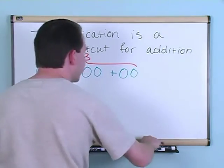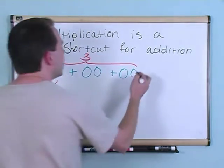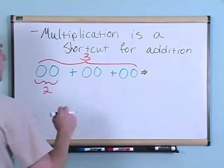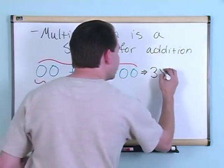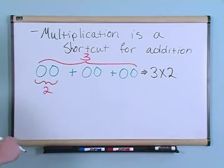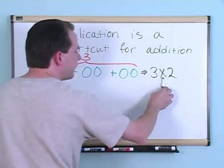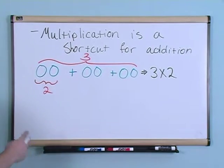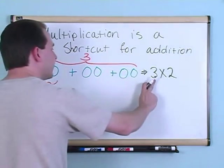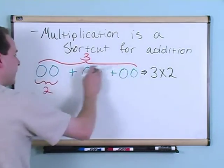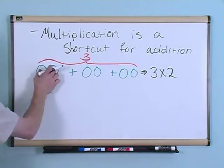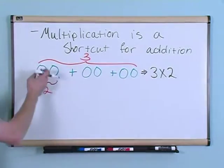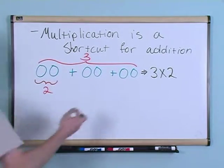So the way that you write this down in multiplication is you say, okay, three times two. You put a big X here. And that just means three times two. What it's telling you is the first number is how many groups you have. In this case, three groups. The second number is how many numbers in each group, how many things in each group. These can be pencils or pens or apples or whatever, but I have them grouped like this. So three times two.